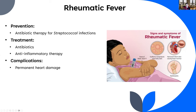Treatment is antibiotics plus anti-inflammatory therapy to address the rash, joint pain, and cardiac inflammation. Complications can include permanent heart damage — cardiomyocytes do not undergo mitosis after development, so damaged heart cells stay damaged. Heart surgery and valve replacements may be required if rheumatic fever progresses too far.